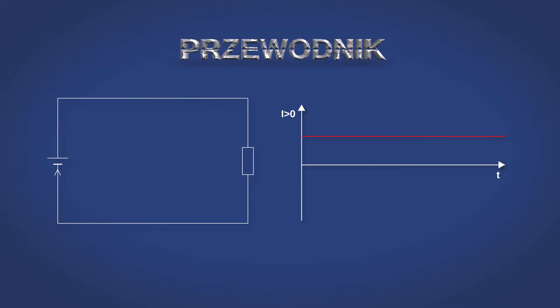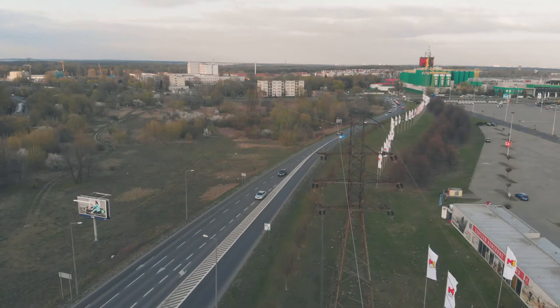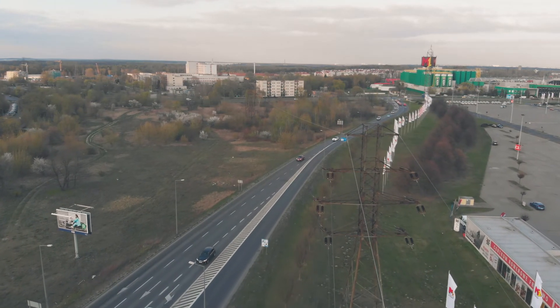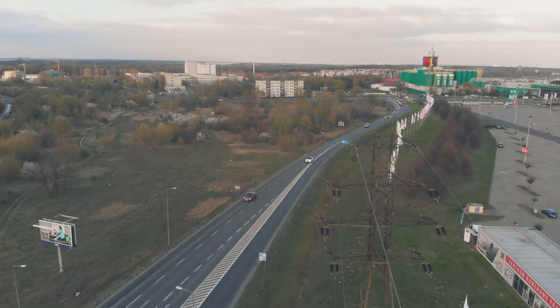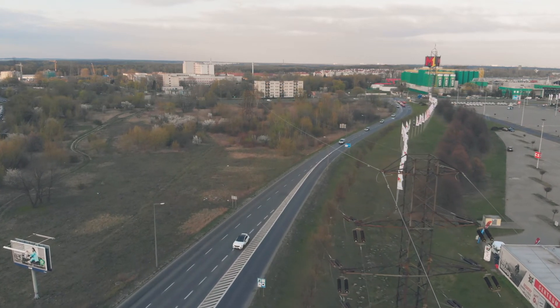Rezystywność miedzi wynosi 1,7 × 10⁻⁸ Ω/m², podczas gdy rezystywność izolatorów jest rzędu 10¹² Ω/m². Przewody służące do przesyłu energii elektrycznej mają swoją rezystancję, która powoduje straty. Aby zminimalizować te straty, zwiększa się napięcie sieci przesyłowej.